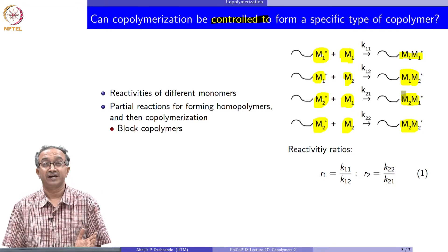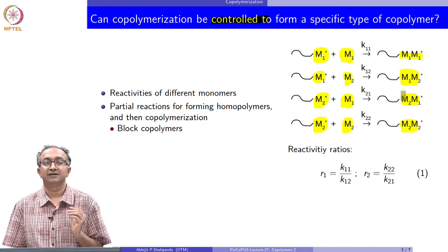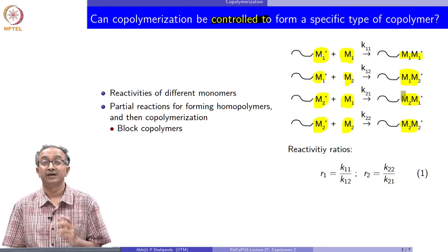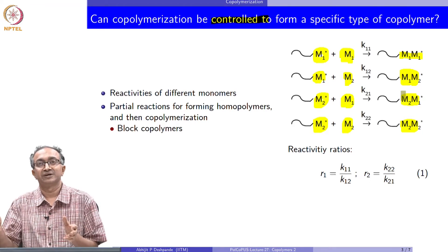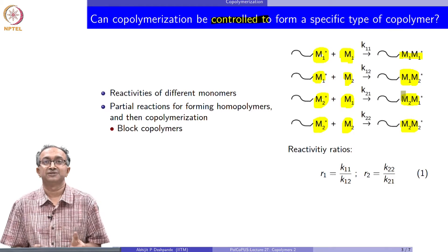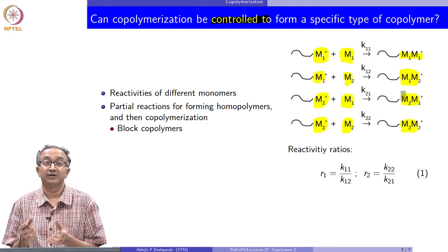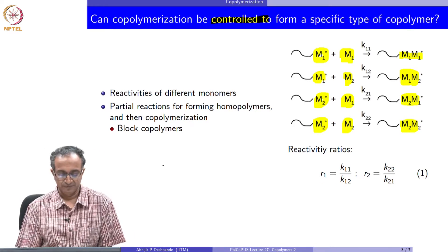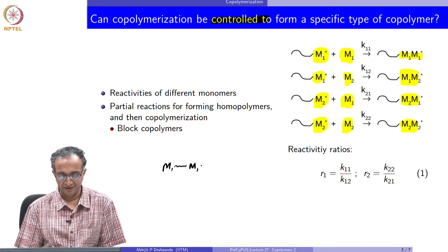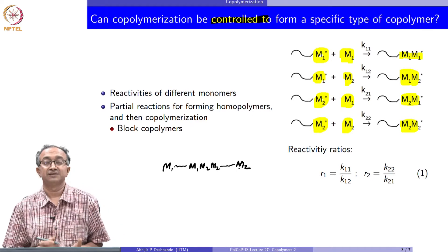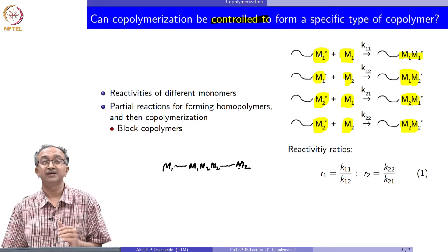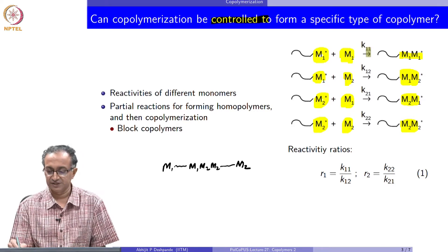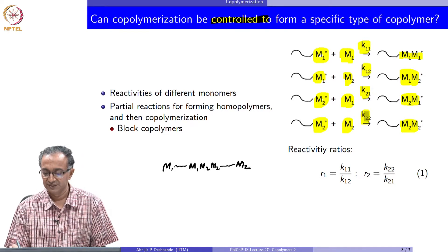The question is can we control this polymerization to obtain a random copolymer, where M1 and M2 are randomly distributed, or a block copolymer, where M1 reacts with M1 to give M1-M1-M1-M1. Eventually, by statistical distribution, one M2 will react, but once an M2-M1 or M2 bond is found, we would like M2 to react with itself. That way we get M1-M1-M1-M1 followed by M2-M2-M2 — a block of M2. This is how we think about control of polymerization.